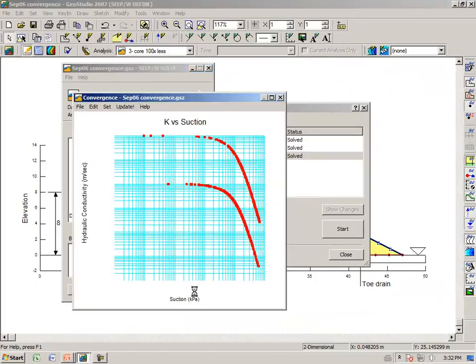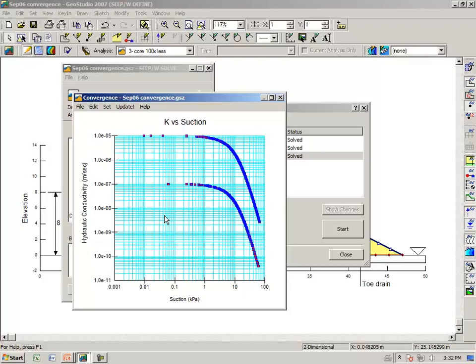Again, if we create the graph, now we see that the red results now fall in blue squares. They are exactly on the function and this is an indication of a converged solution.